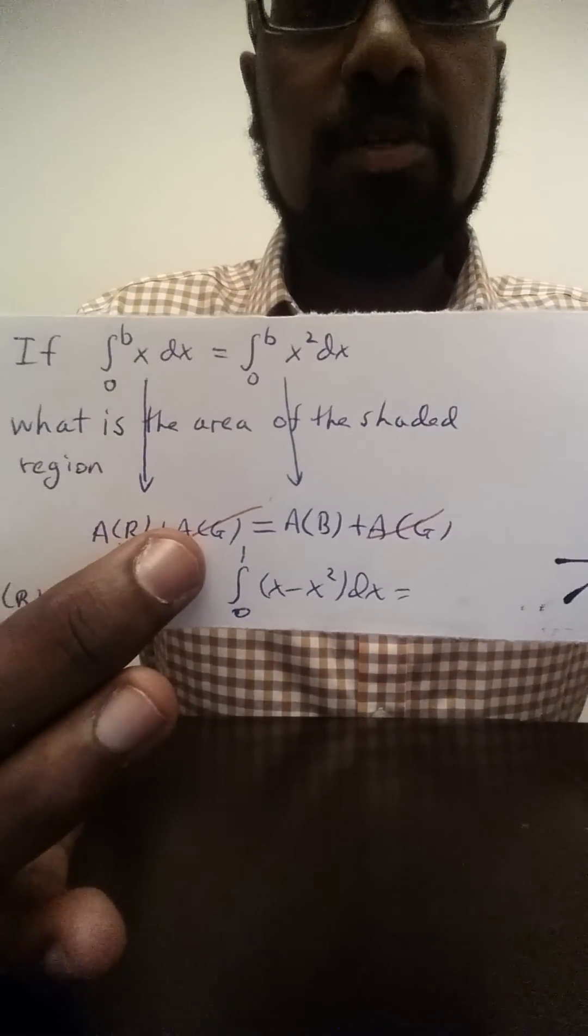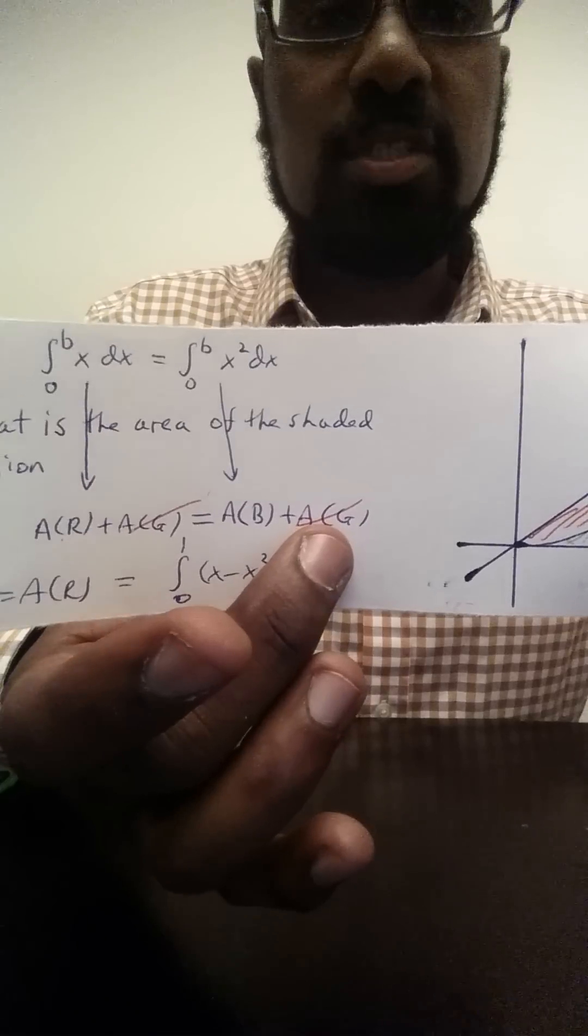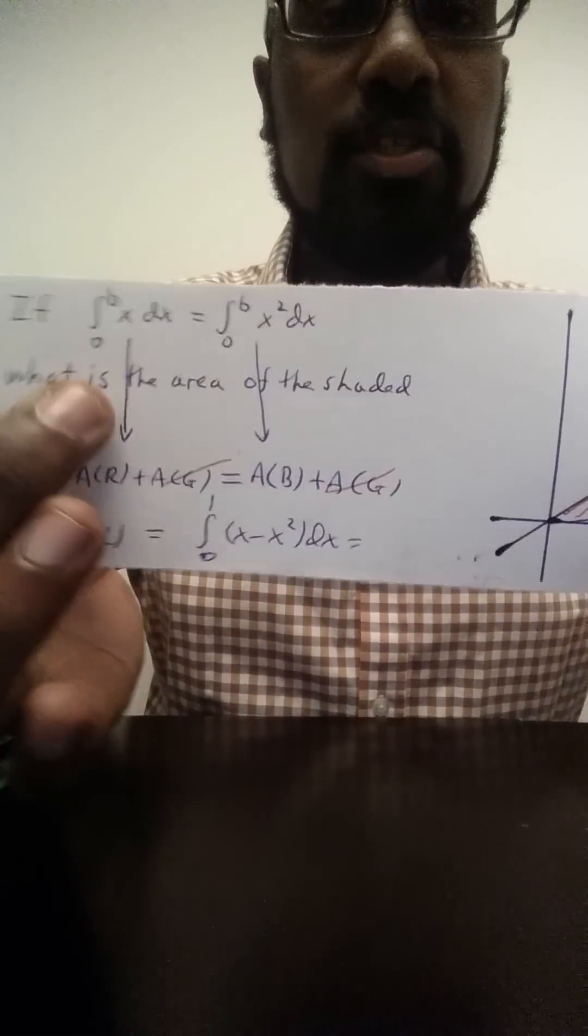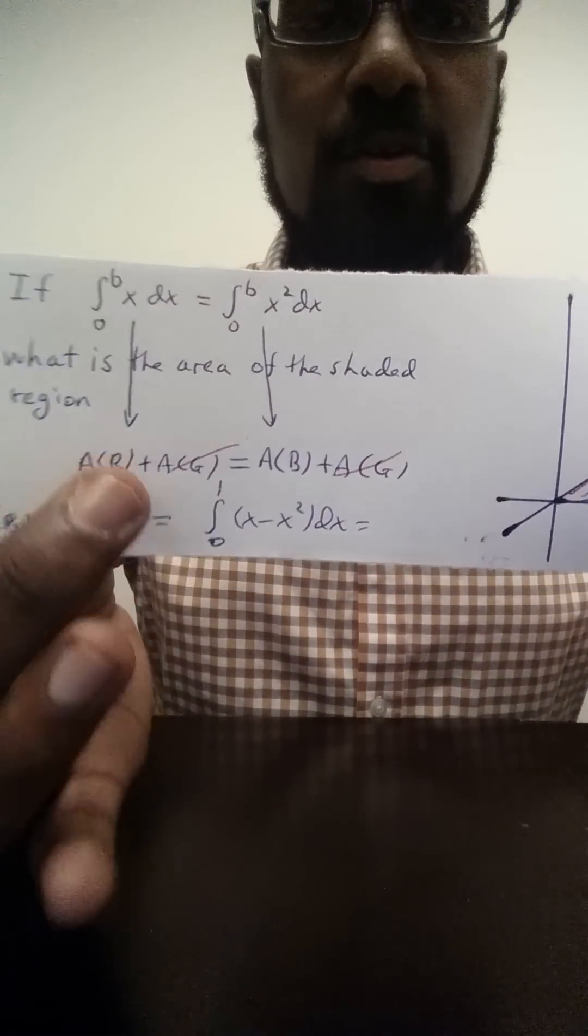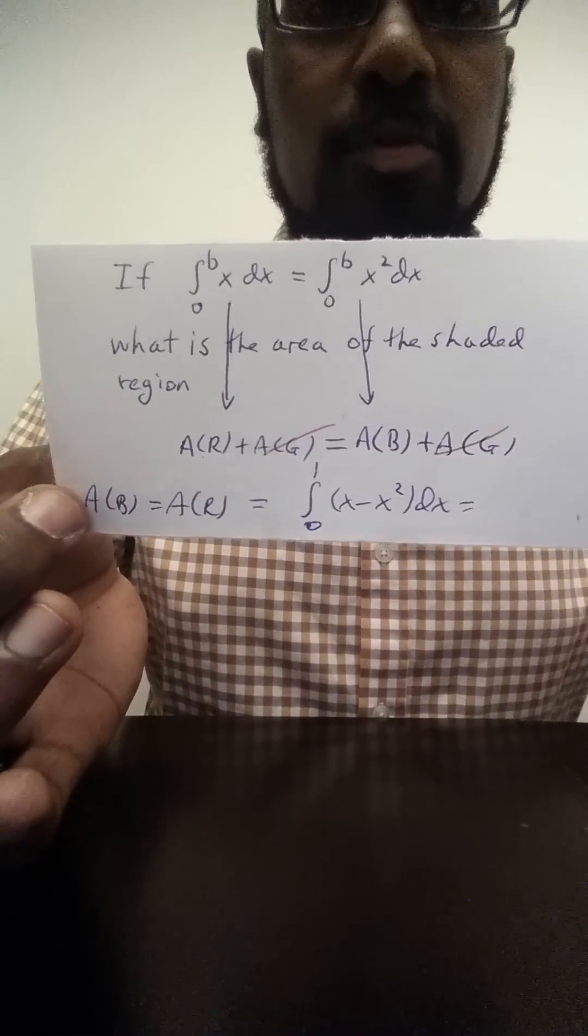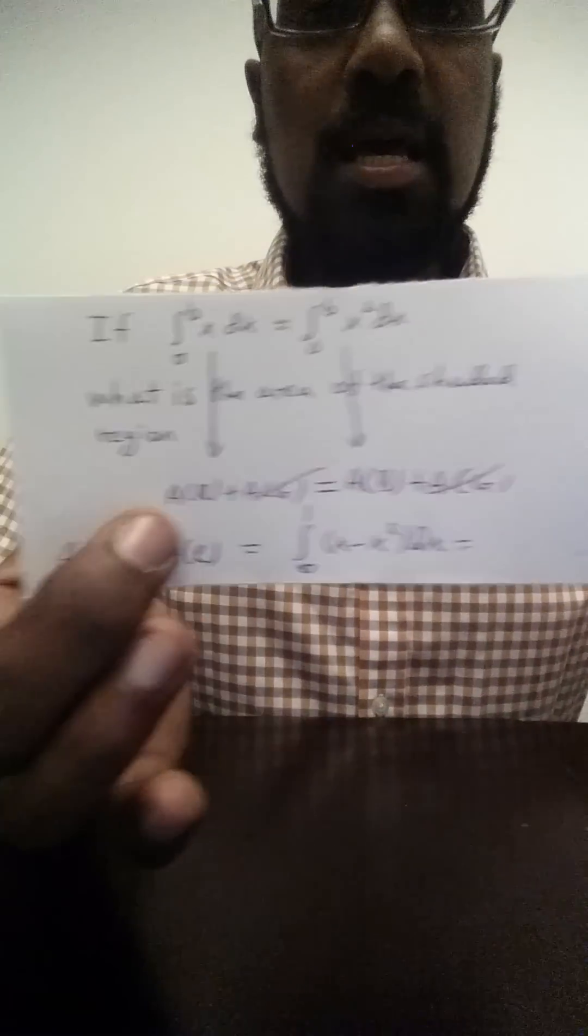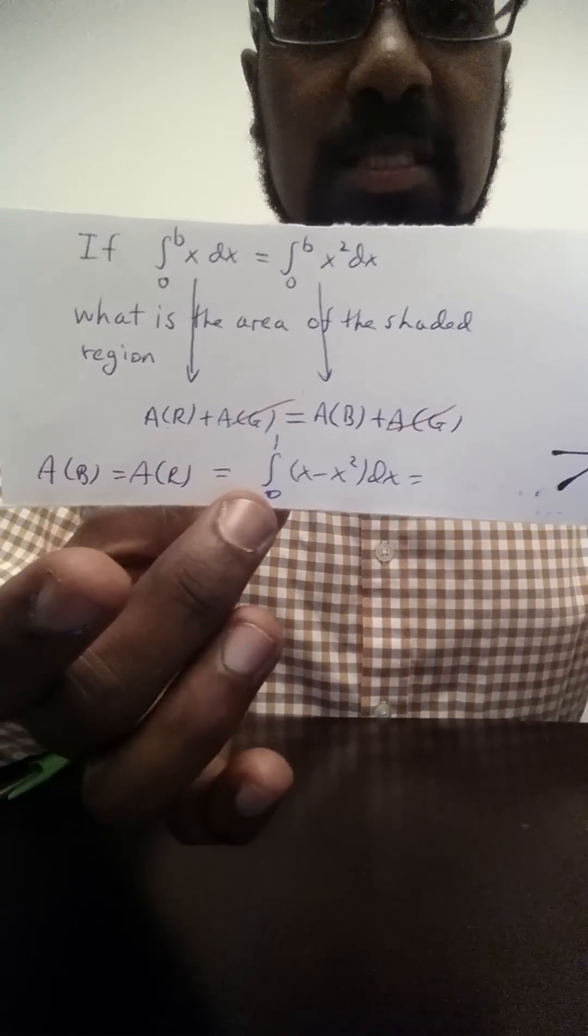Again, the area of the red region and the green region is the same as the area of the blue region and the green region together. So the area of the blue region, which is the region we're interested in, can be calculated completely bypassing calculating b.